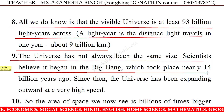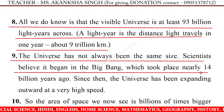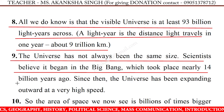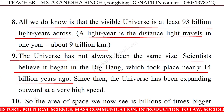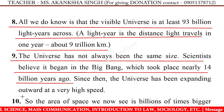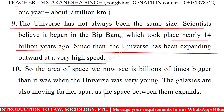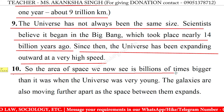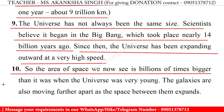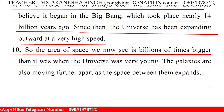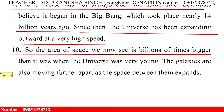Number 9: The universe has not always been the same size. Scientists believe it began in the Big Bang, which took place nearly 14 billion years ago. Since then, the universe has been expanding outward at a very high speed. Number 10: So, the area of space we now see is billions of times bigger than it was when the universe was very young. The galaxies are also moving further apart as the space between them expands.